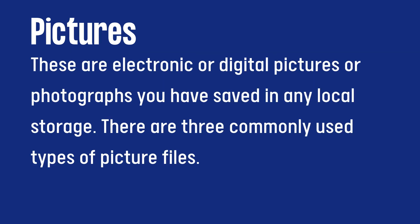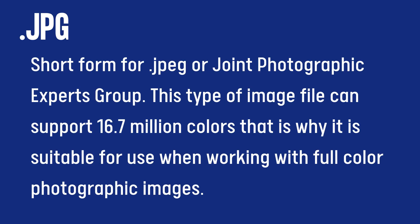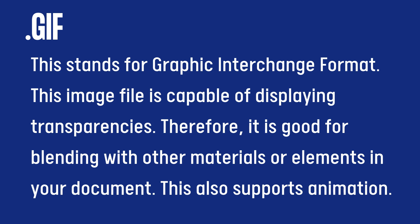Let us get to know the characteristics of the following materials. Let us start with Pictures. These are electronic or digital pictures or photographs you have saved in any local storage. There are three commonly used types of picture files. JPEG, short for Joint Photographic Experts Group, can support 16.7 million colors, making it suitable for full color photographic images. GIF stands for Graphic Interchange Format and is capable of displaying transparencies, making it good for blending with other materials or elements in your document.